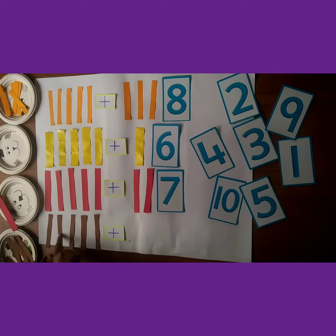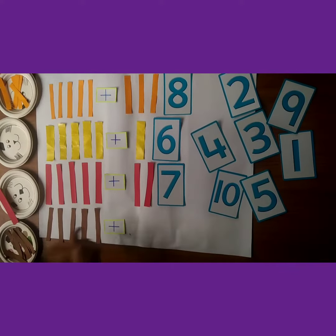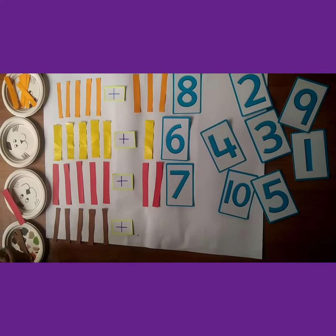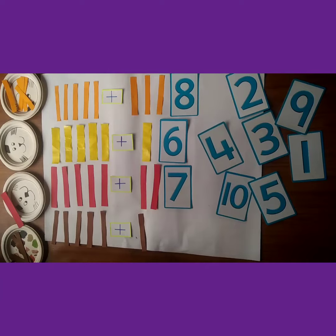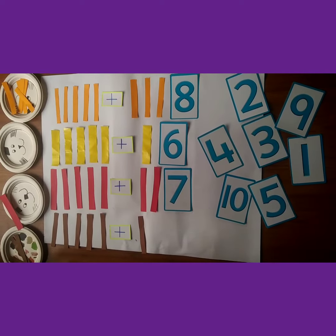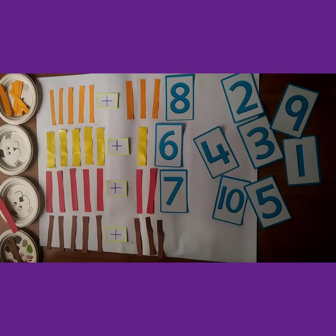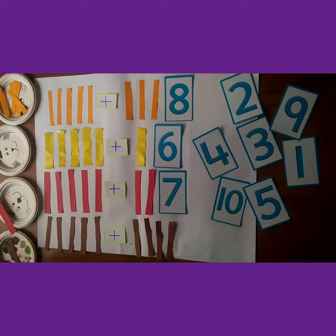In this row: 1, 2, 3, 4, 5. 5 strips. We add 4 more: 1, 2, 3, 4, 5.